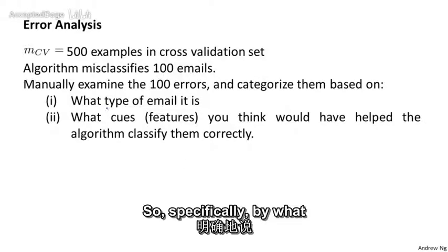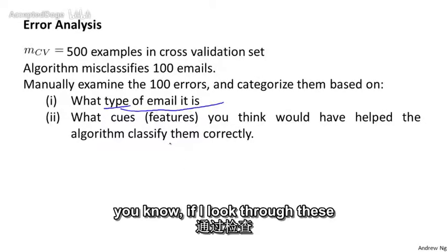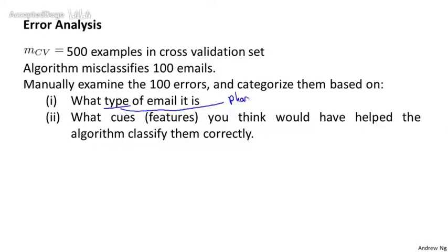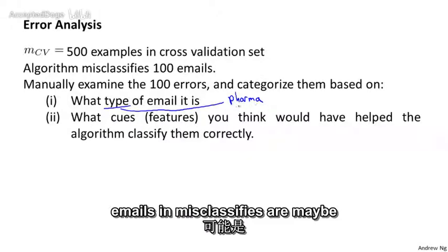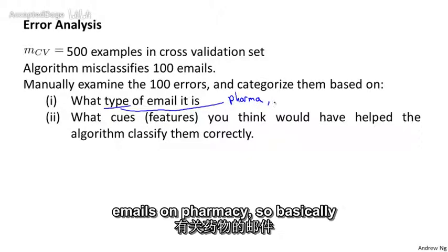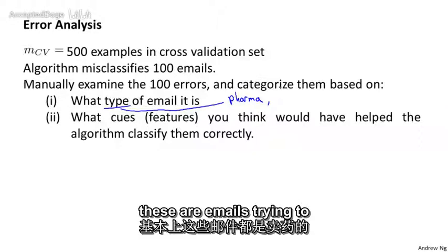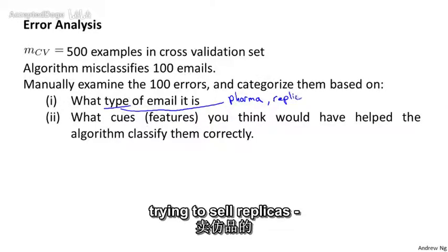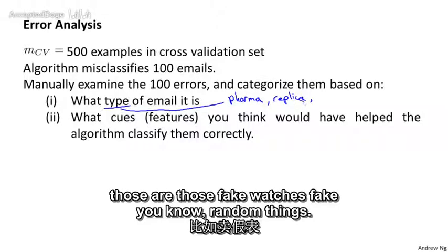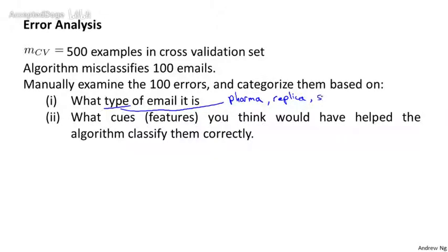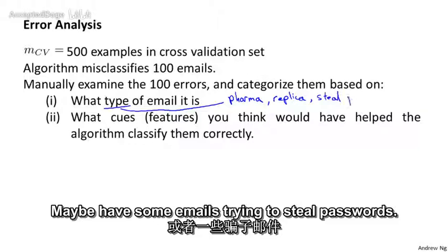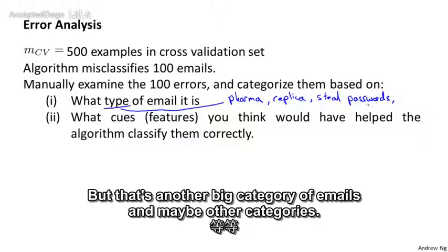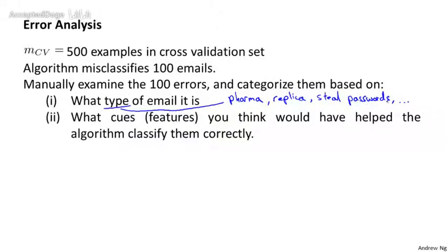So specifically, by what type of email it is, if I look through these 100 errors, I might find that maybe the most common types of spam emails it misclassifies are maybe emails on pharmacies, basically emails trying to sell drugs. Maybe emails that are trying to sell replicas, sort of fake watches, fake random things. Maybe have some emails that are trying to steal passwords. These are also called phishing emails, because there's another big category of emails. And maybe other categories.